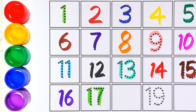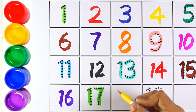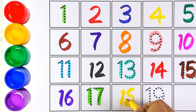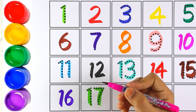This is number 17! Number 17, very good. Let's move on to the next one. I'm using yellow color and I'm writing number 18 — one and eight makes the number 18. Let's try number 19 with pink color.